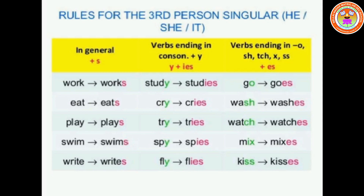Rule 3: If the verb ends in -o, -sh, -ch, -x, or -ss, simply add -es. For example: go → goes, wash → washes, watch → watches, mix → mixes, kiss → kisses. Rule 4: If the verb ends in a vowel plus -y, simply add -s. For example: play → plays, enjoy → enjoys, key → keys, toy → toys.